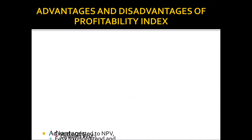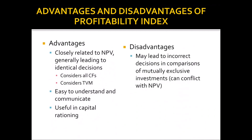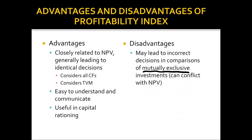Advantages of the profitability index: it is closely related to NPV and generally leads to identical decisions, considers all cash flows and time value of money, is easy to understand and communicate, and is useful in capital rationing when funds are limited — it identifies projects generating the greatest bang for your buck. Disadvantage: it may lead to incorrect decisions when comparing mutually exclusive projects. When in doubt with mutually exclusive projects, use net present value, as it is consistent with maximizing shareholders' wealth.